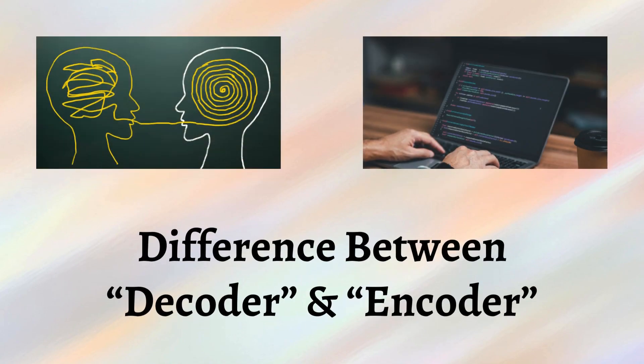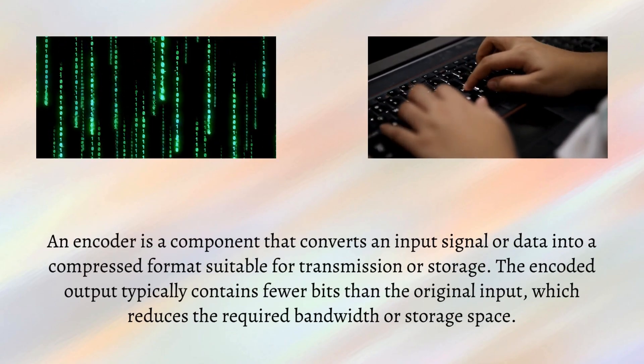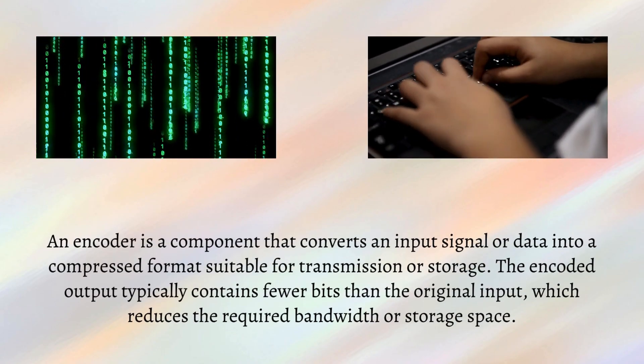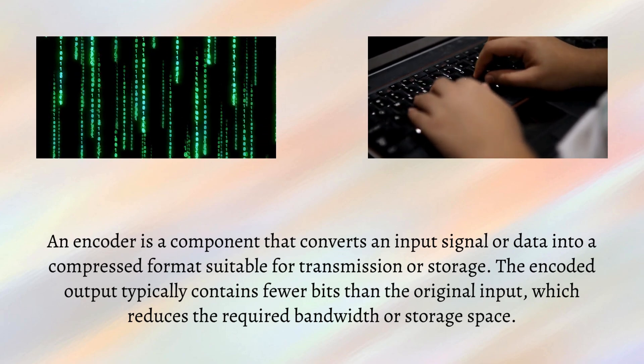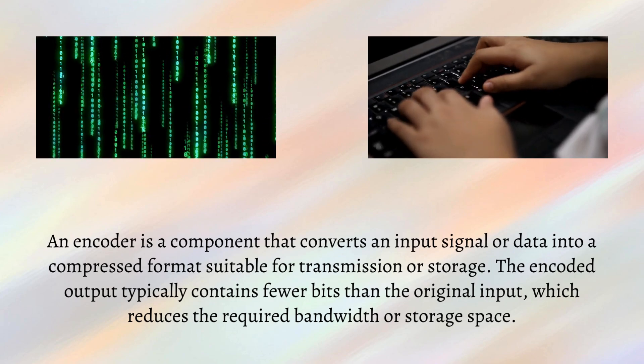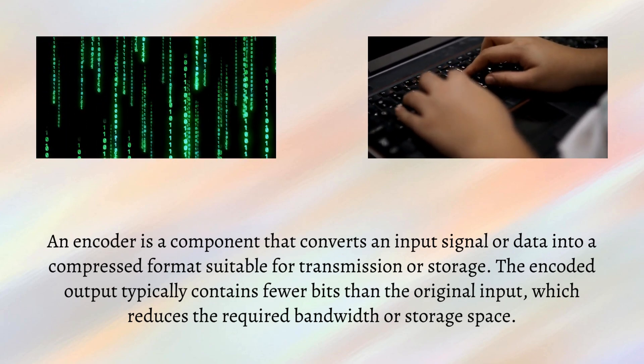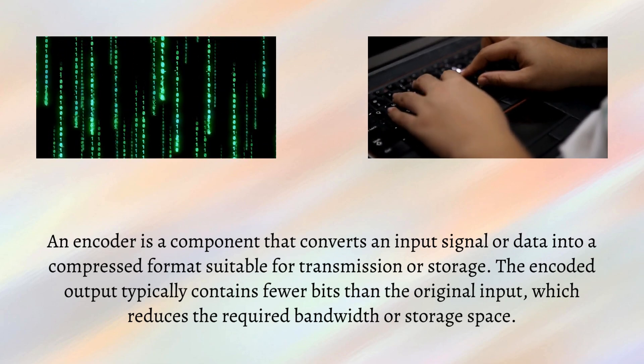Difference between decoder and encoder. An encoder is a component that converts an input signal or data into a compressed format suitable for transmission or storage. The encoded output typically contains fewer bits than the original input, which reduces the required bandwidth or storage space.